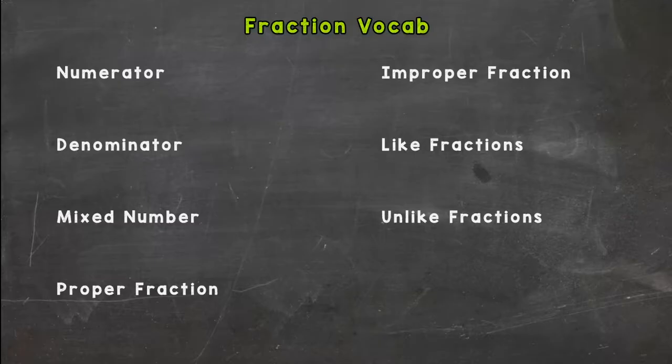So let's jump into the first one here. We have numerator. I'm gonna write out a random fraction over here, how about three-eighths. Numerator is the top number of that fraction.